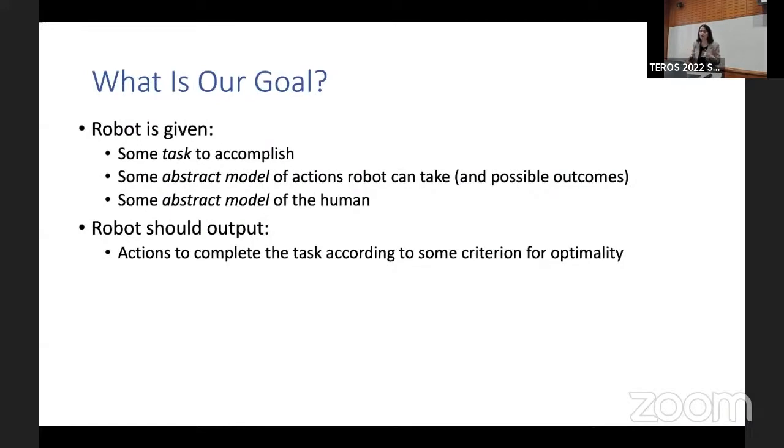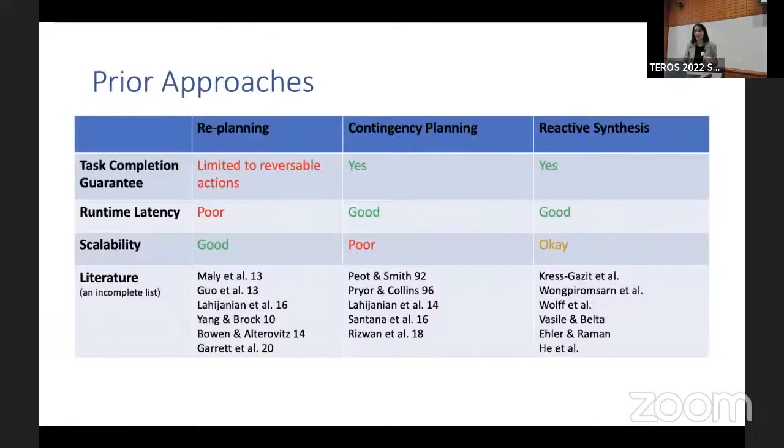So what is our goal here? We have some tasks to accomplish. We have some abstract model of actions that the robot can take and possible outcomes. And some abstract model of the human. And what do we want to output? We want actions to complete a task according to some criteria of optimality. We can do that with re-planning. Yes, it has its advantages and disadvantages. Disadvantage could be runtime latency if you're not careful. We have contingency planning. Yes, you can do that. But you have to think about all these contingencies. And we said we wanted to investigate reactive synthesis for formal method. It provides kind of a structured framework to reason about the things that can happen in your space.